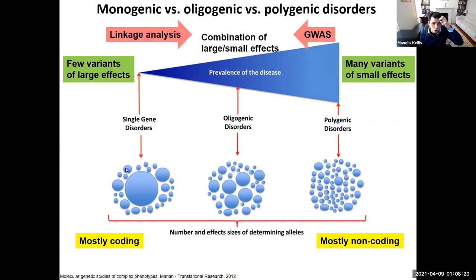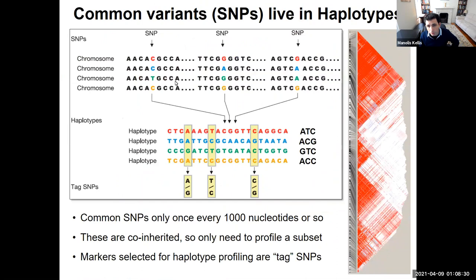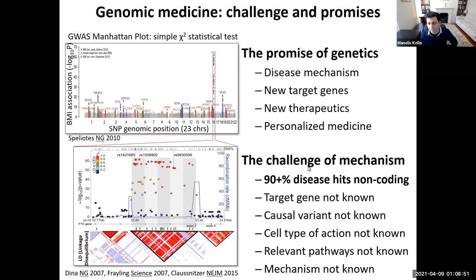We've talked about common and rare variants, strong effects and weak effects, polygenic risk scores, the application domains of GWAS, and linkage analysis. We've talked about linkage disequilibrium, which is your friend if you're trying to find where the blocks of association are, because you can genotype only a subset of SNPs and find the blocks. But it becomes your enemy when you're trying to find the causal variants driving these associations — that has been the challenge of interpreting genome-wide association studies, since the vast majority of associations are non-coding and involve multiple SNPs, meaning we don't know the causal variant, target gene, cell type of action, or relevant pathways.